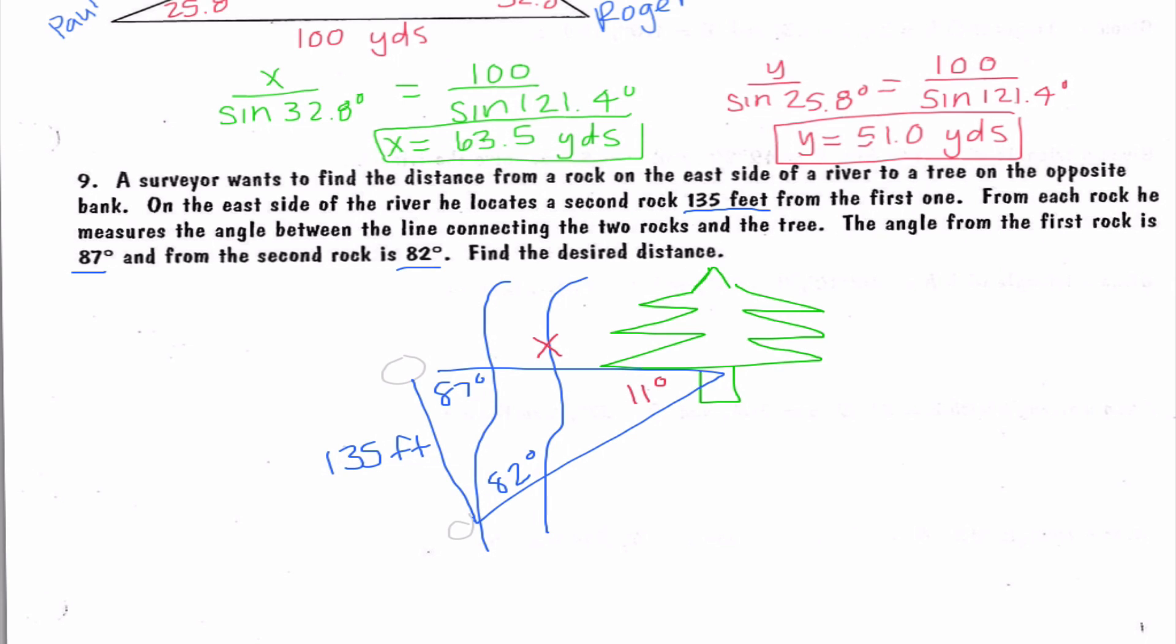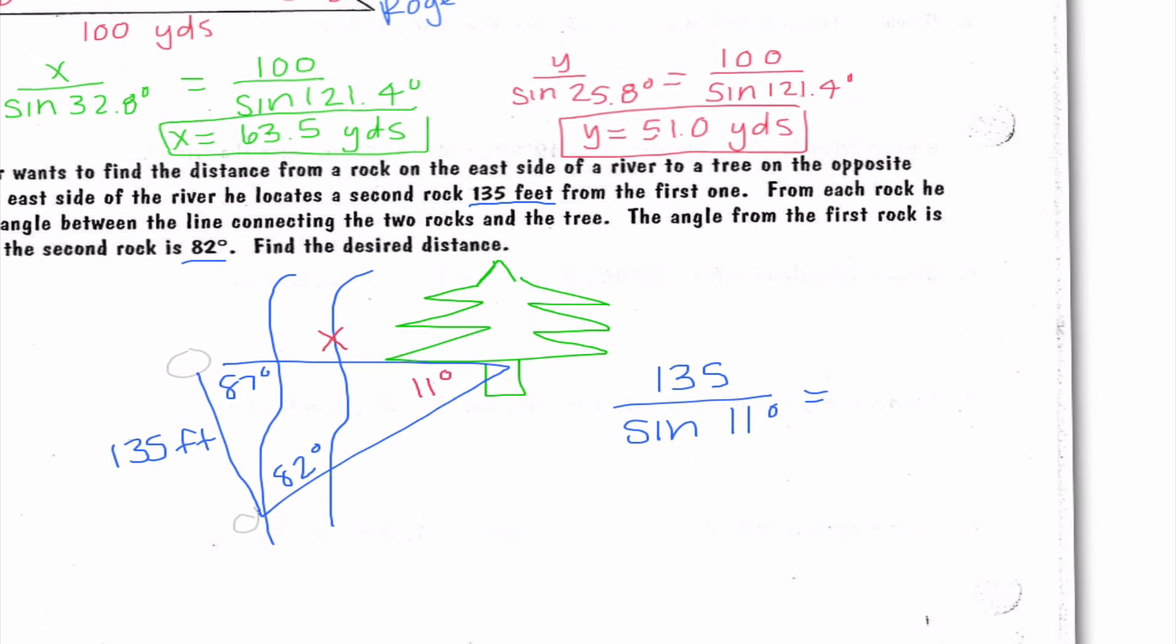Oh, and by the way, I totally drew this backwards, but it doesn't even matter that I don't know my east from my west. All that matters is that we can draw out the triangle. Anyways, the pieces of information that match, I know 11 degrees goes with 135. So I'm going to say 135 over sine of 11 degrees equals, and if I'm finding side x, I'm going to have to use 82 degrees. So I'm going to say x over sine of 82 degrees. When I cross multiply and divide, I get x is equal to 700.6 feet.